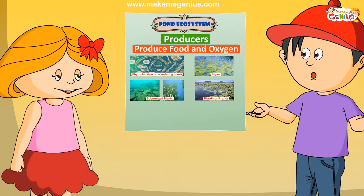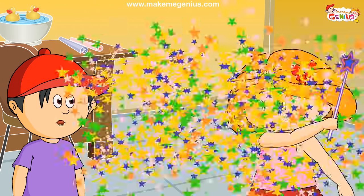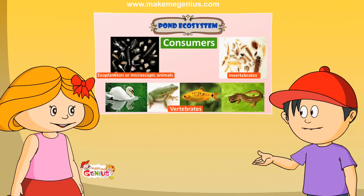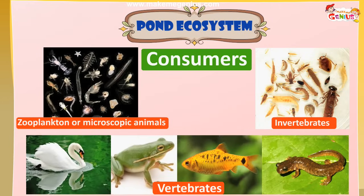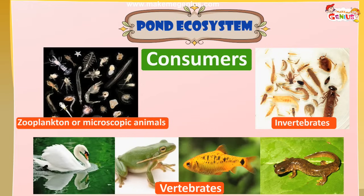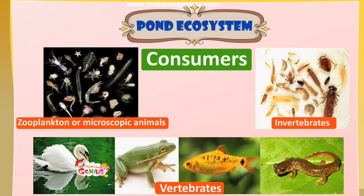Now it is time to make a chart about consumers. There are many vertebrate and invertebrate animals in the pond. Vertebrates are animals with backbones — in a pond, these might include fish, frog, salamanders, and turtles. Invertebrates are those who don't have backbones. Zooplankton are microscopic animals that eat phytoplankton or small zooplankton. They float in the open water portions of the pond and are important food for some animals.